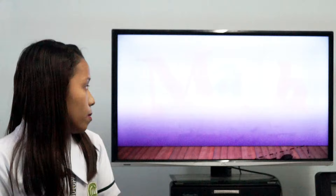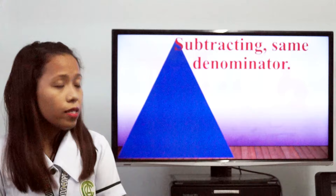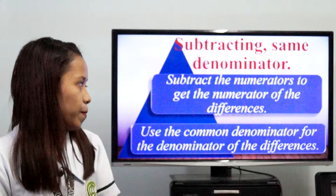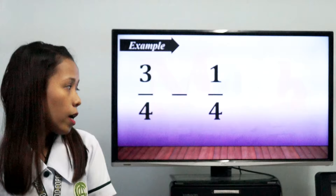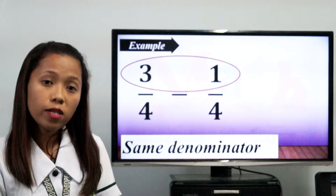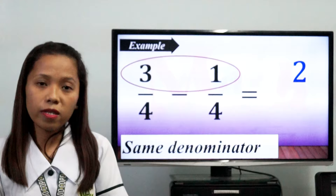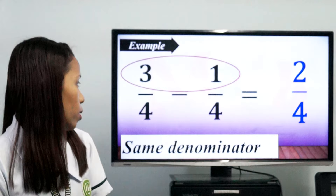Now let's proceed in subtracting fractions with the same denominator. Subtract the numerators to get the numerator of the difference, and use the common denominator for the denominator of the difference. For example, 3/4 minus 1/4. They have the same denominator, so just simply subtract 3 minus 1, which equals 2. And just copy the common denominator, 4. So 3/4 minus 1/4 equals 2/4.